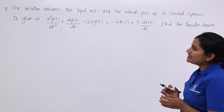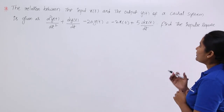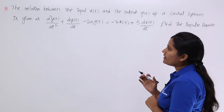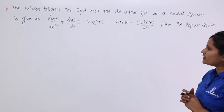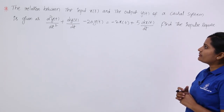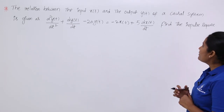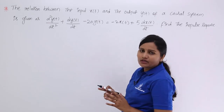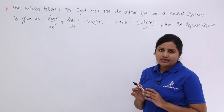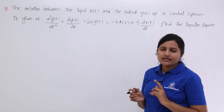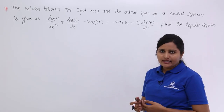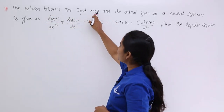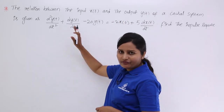Observe the problem here. The relation between the input x(t) and the output y(t) of a causal system is given as: d²y(t)/dt² + dy(t)/dt − 20y(t) = −2x(t) + 5·dx(t)/dt. Find the impulse response. In signals and systems, y(t) is considered the response and x(t) is considered the excitation, that means the input. They have given the relation between input and output described by this differential equation.